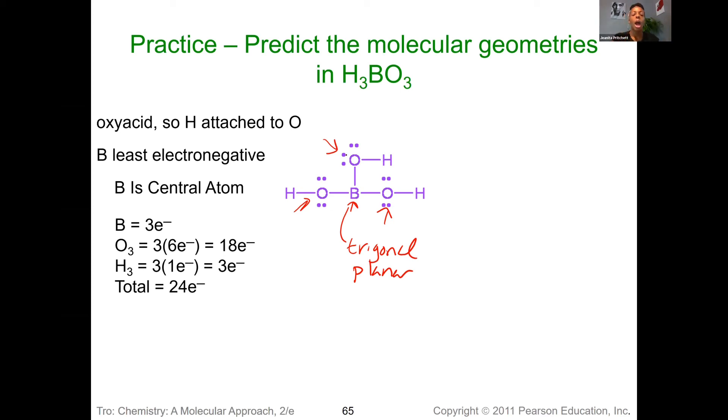For our oxygen, and it doesn't matter which one you pick because they all have the same bonding pattern. They all have two lone pairs, two bonding regions. And we've seen this one a few times. So we know that the electron geometry for the oxygens will be tetrahedral and the molecular geometry would be bent for each.